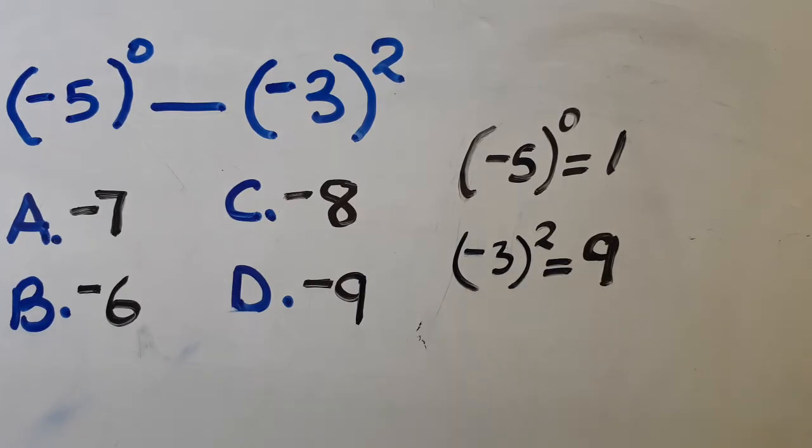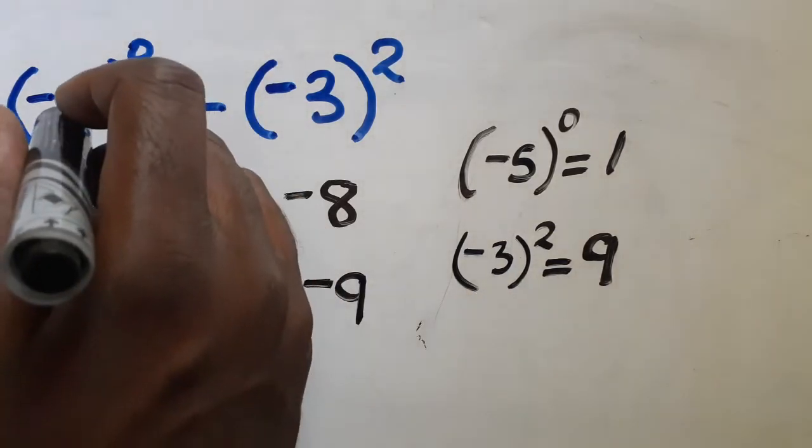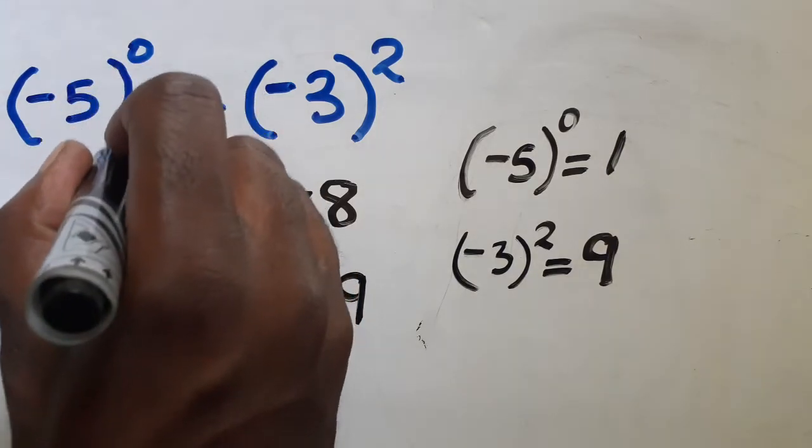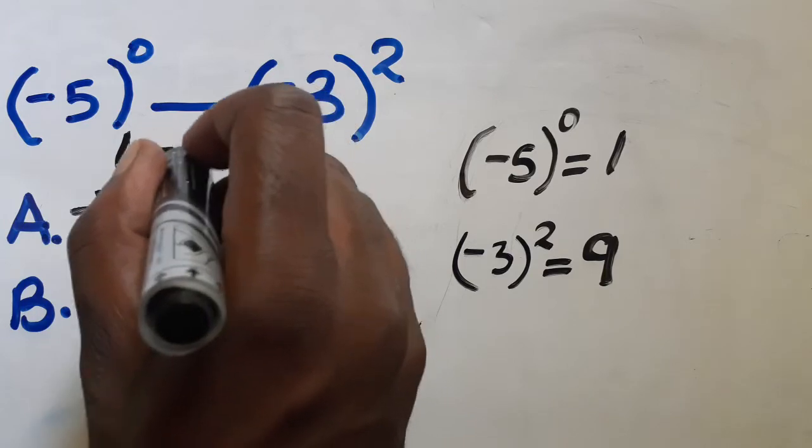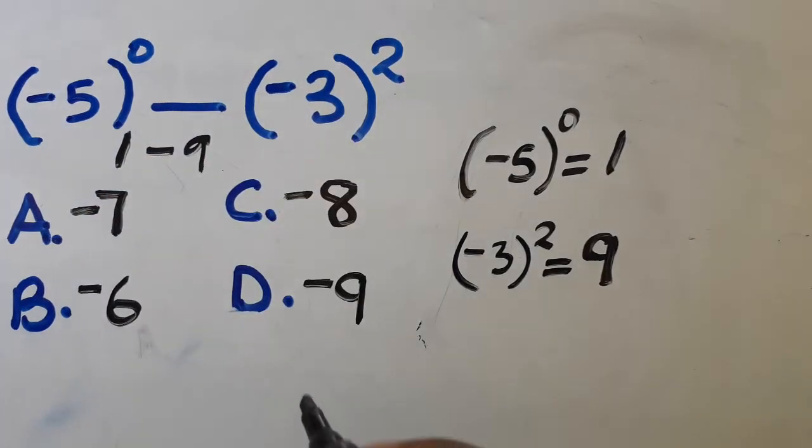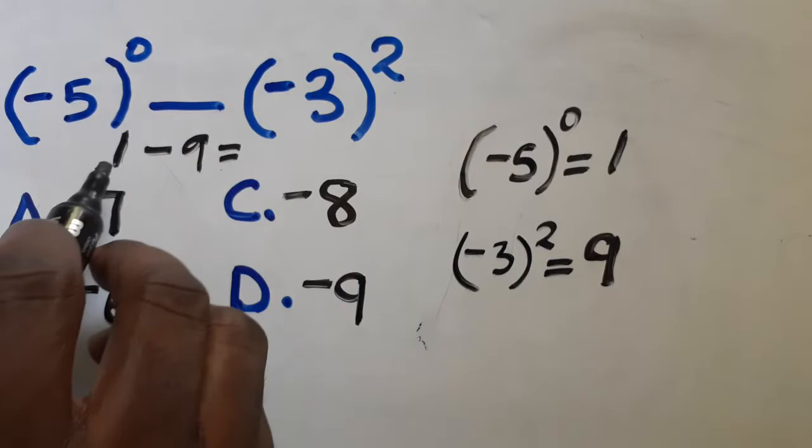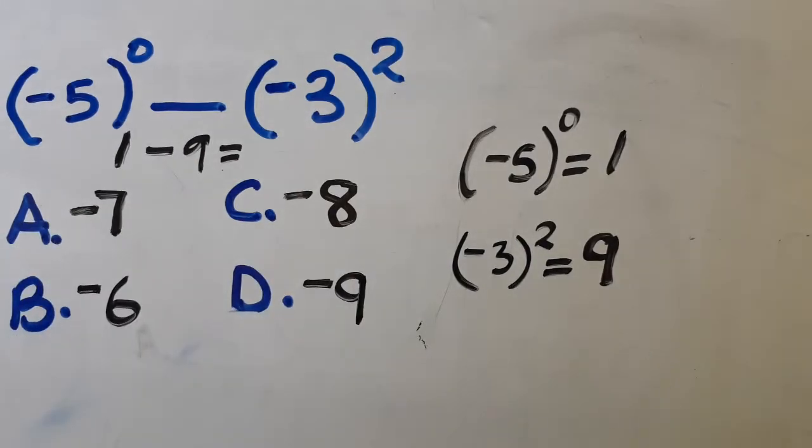So I hope you have known that this is going to give us what? This is giving us one and then this is giving us nine. Isn't it? What do we get? One minus nine.